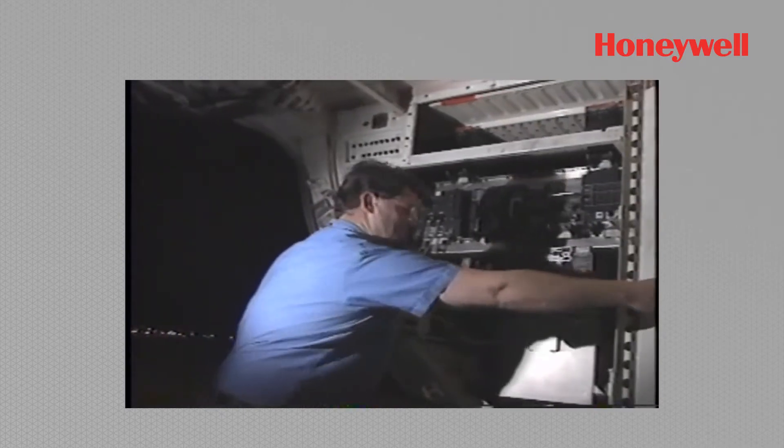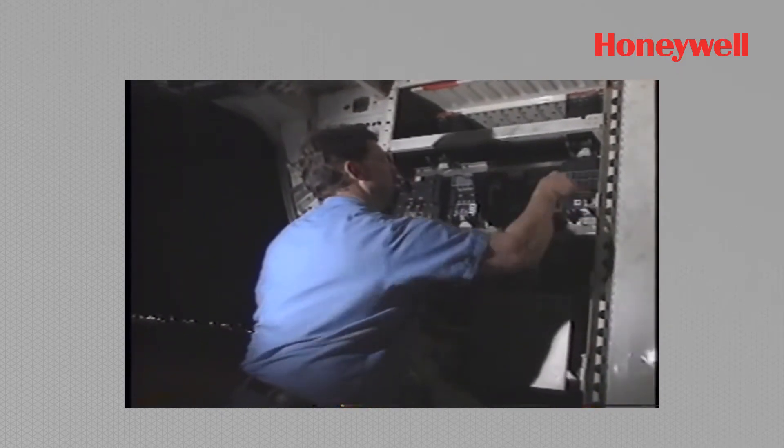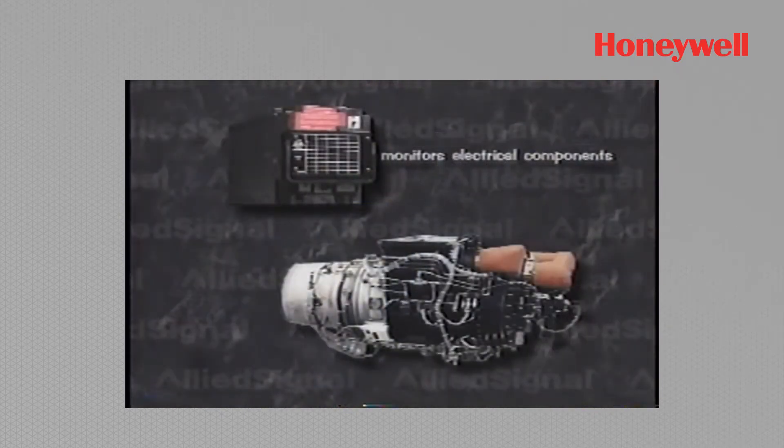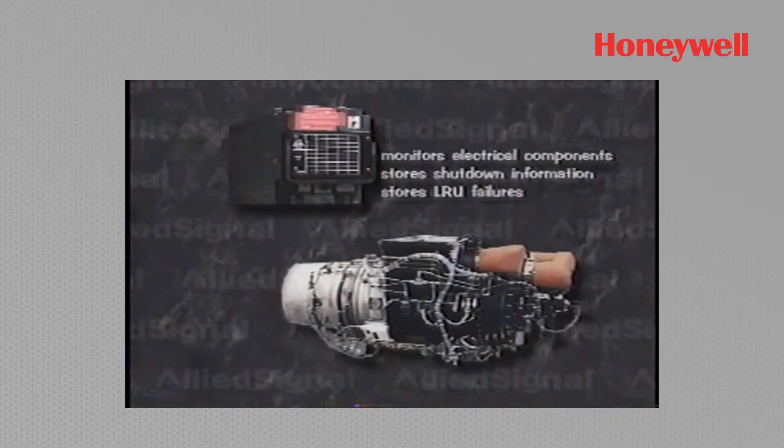Located inside the aft cargo door behind removable panels, the ECU continuously monitors the APU's electrical components, stores shutdown information along with LRU failures, and provides diagnostic information of APU pneumatic availability.